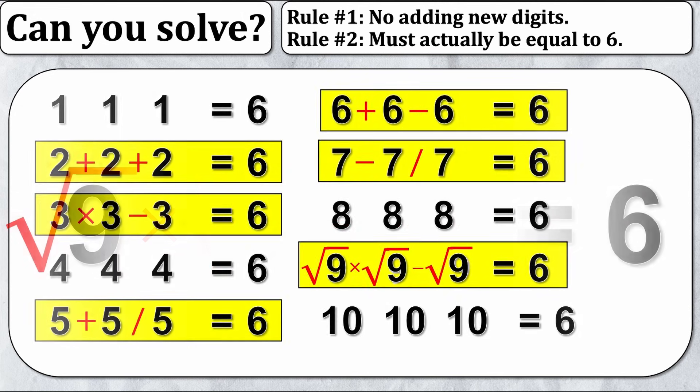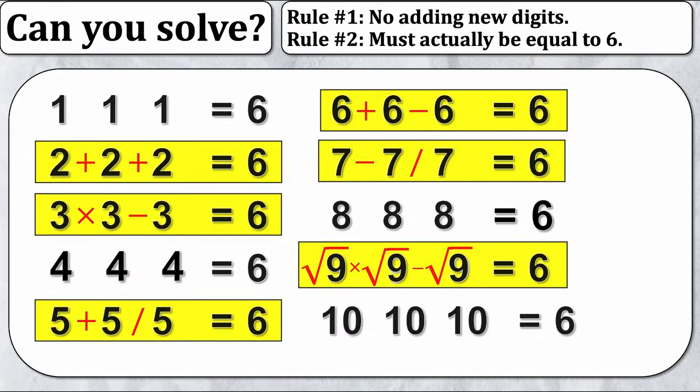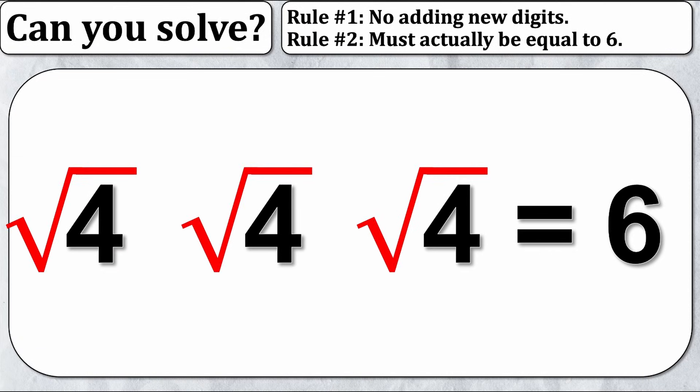Along the same lines we can actually solve four, because if we put square roots on all of the fours then it's just a problem of two. And two was the easiest one we did, it's just two plus two plus two equals six.